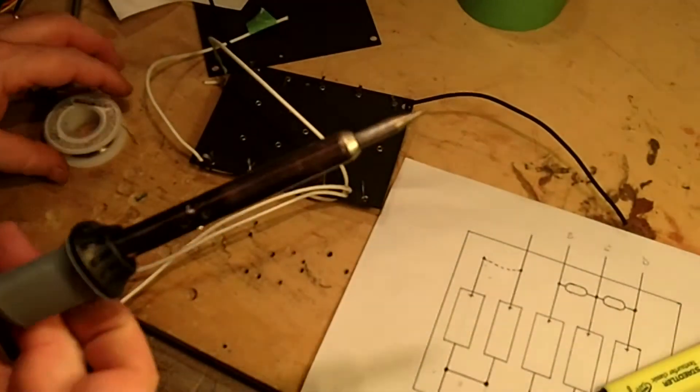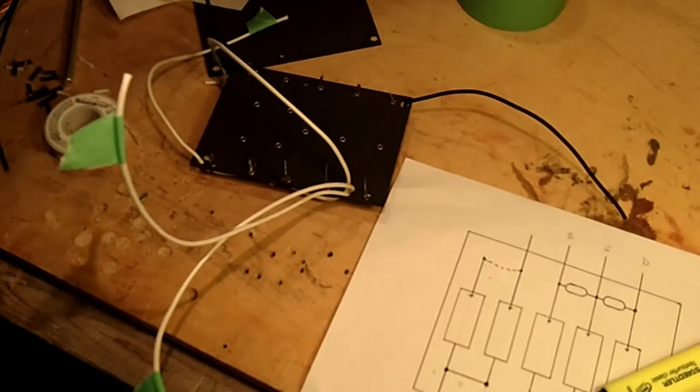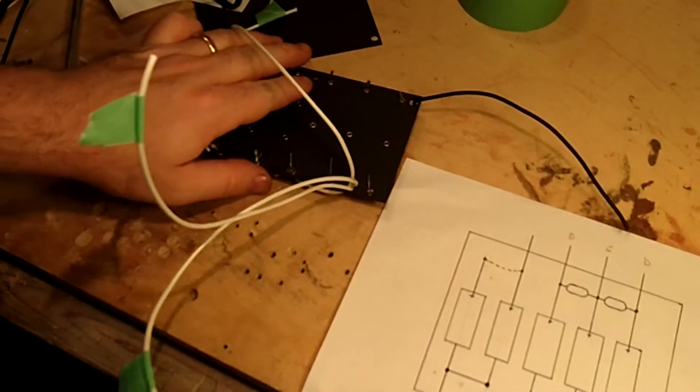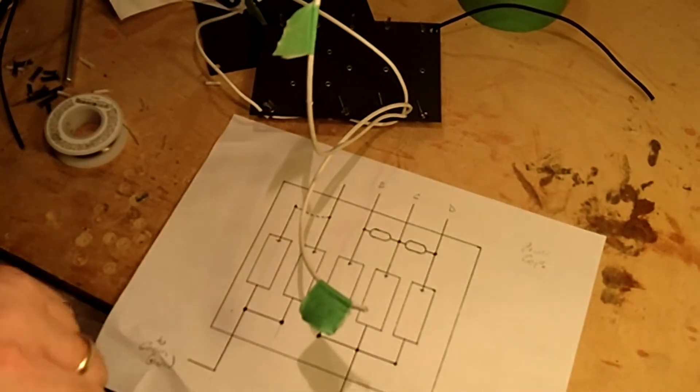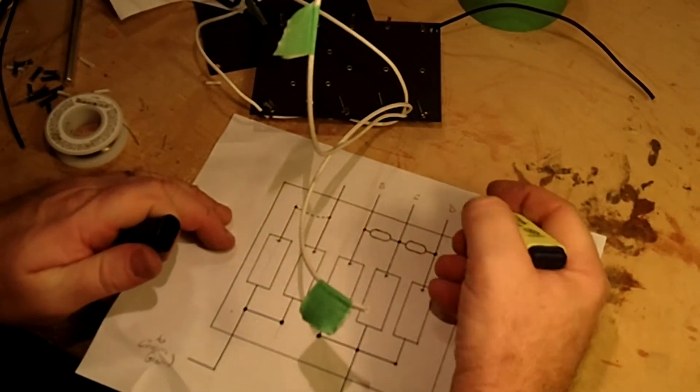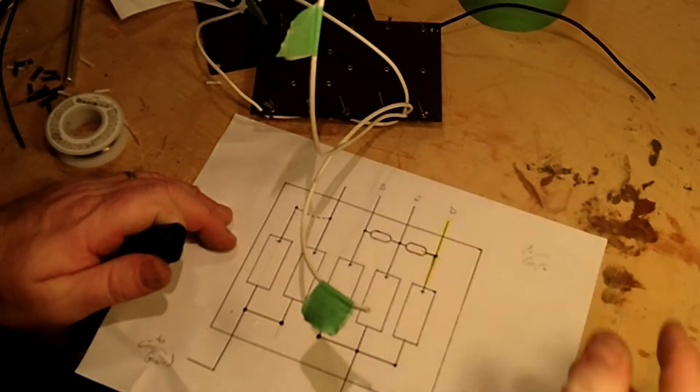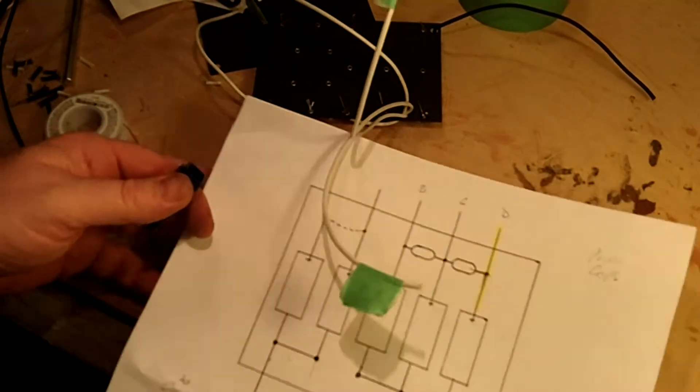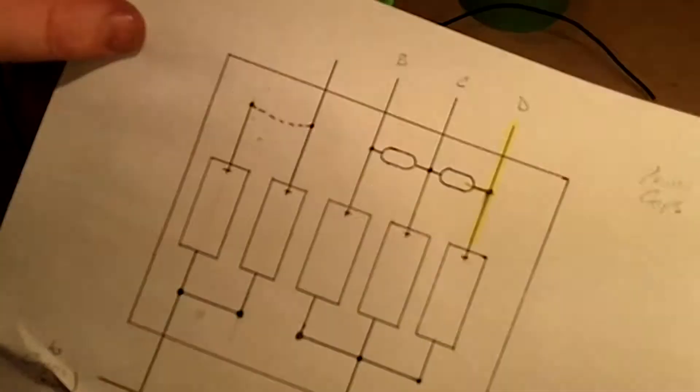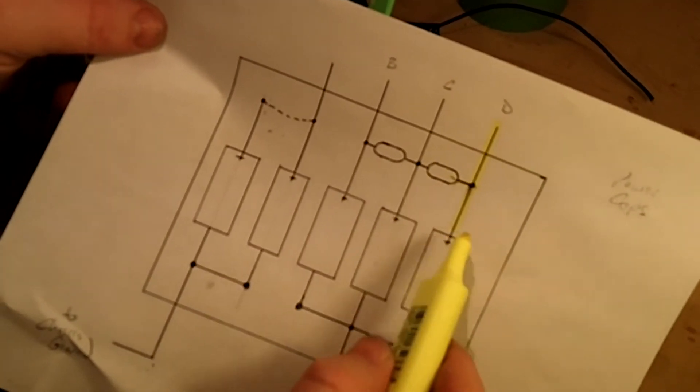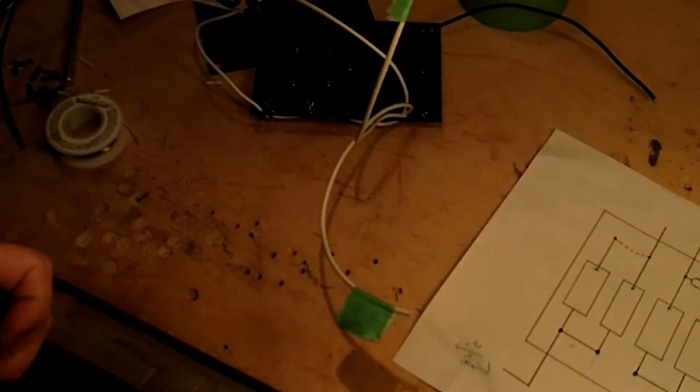Then once it's soldered in, you want to highlight that connection. You know, just do this one joint at a time. I mean believe me, it may seem kind of silly to think that you're going this slow and you're being this anal about it.